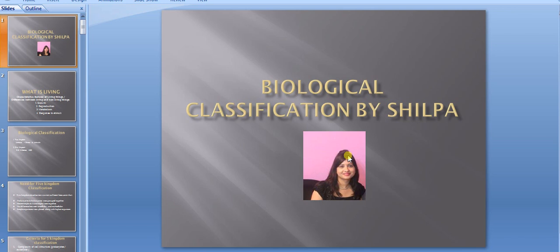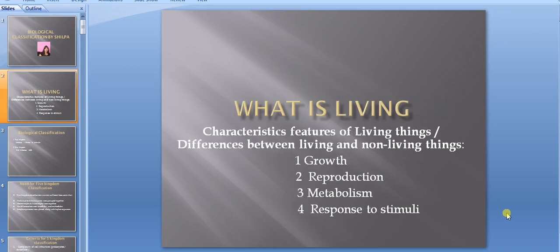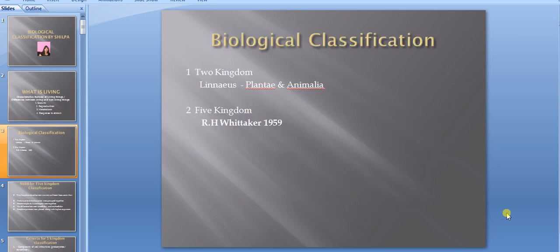First of all, we will study why we need classification and what is the difference between two kingdom and five kingdom classification. If I ask you what is living, you will generally relate it to growth, reproduction, metabolism, and response to stimuli.